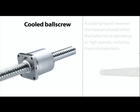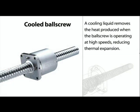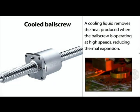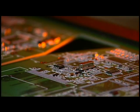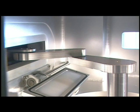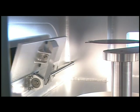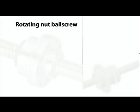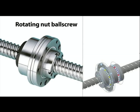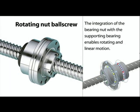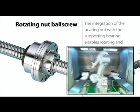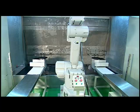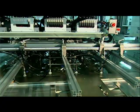Cooled ball screws: a cooling liquid is forced through the center of the nut, removing the heat produced when the ball screw is operating at high speeds and reducing thermal expansion. This enables the ball screw to maintain a high level of accuracy when running at high speed. They are used in high-speed machine tools and high-speed general processing center machines. Rotating nut ball screws integrate the bearing nut with a supporting bearing, enabling rotating and linear motion. These are used in semiconductor machinery, industrial robots, woodworking machines, laser processing machines, and conveyor devices.